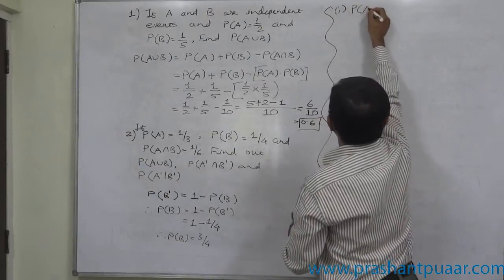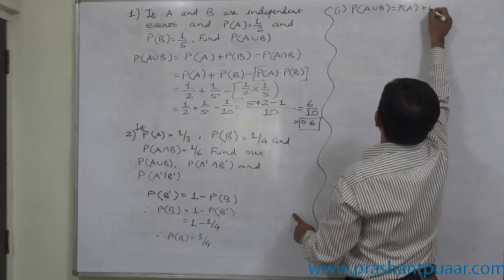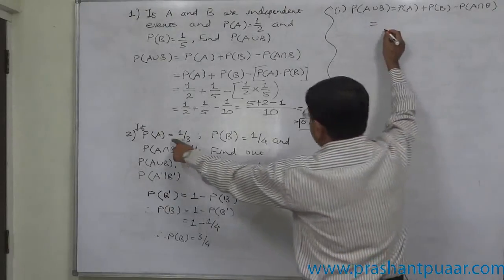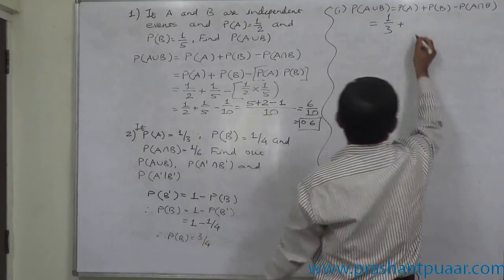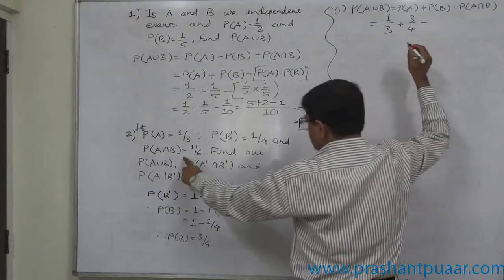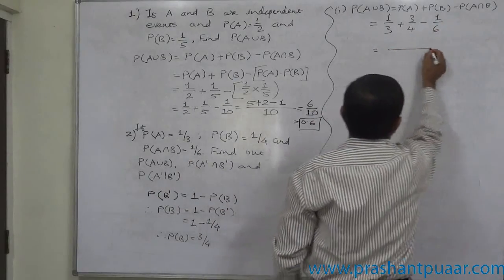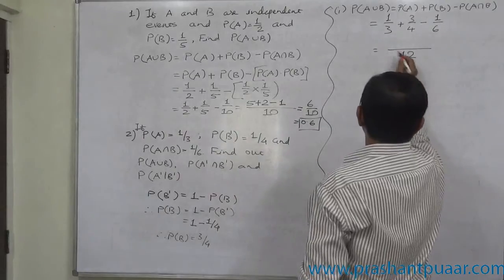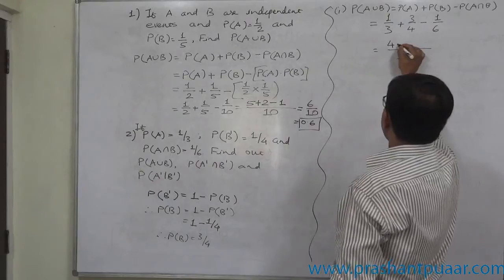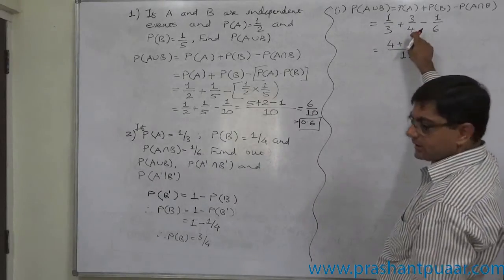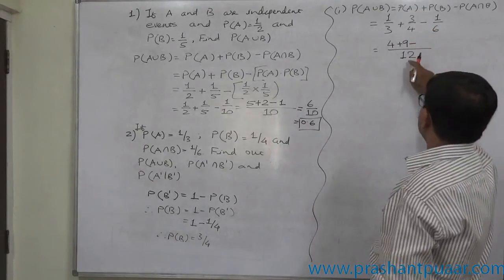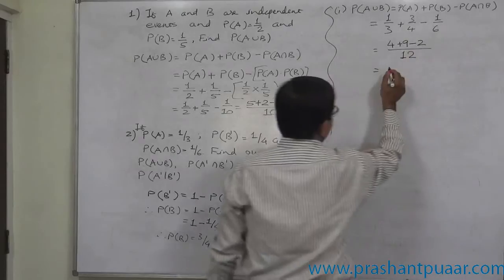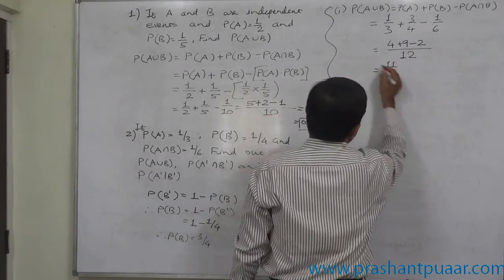Number 1: P(A∪B) = P(A) + P(B) − P(A∩B) = 1/3 + 3/4 − 1/6. Taking LCM of 12: 12/3 gives 4, times 1 = 4; plus 12/4 gives 3, times 3 = 9; minus 12/6 gives 2, times 1 = 2. So 4 + 9 − 2 = 11, giving P(A∪B) = 11/12.